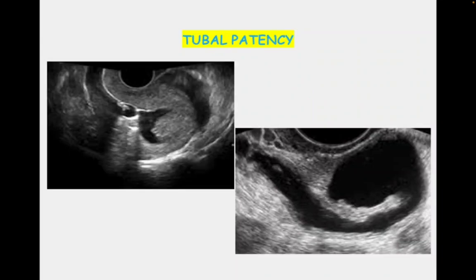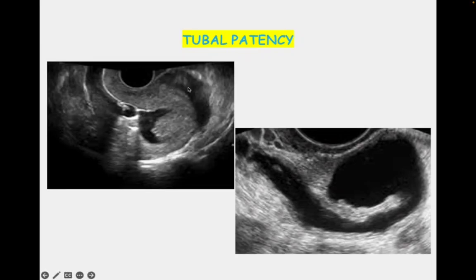Another role of SIS, as mentioned, is tubal evaluation. Previously it was used only for cavity evaluation, but nowadays SIS is also used for tubal evaluation, though there are some issues involved. When fluid is put inside the uterine cavity, the waterfall sign can be clearly seen — the fluid comes into the pouch of Douglas and you can see it coming from the uterine cavity into the fallopian tube.